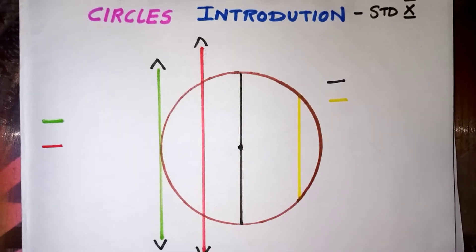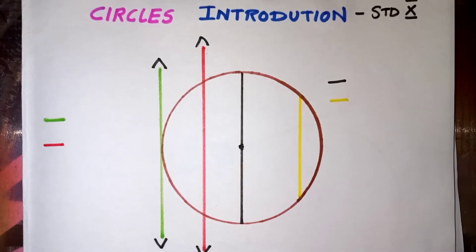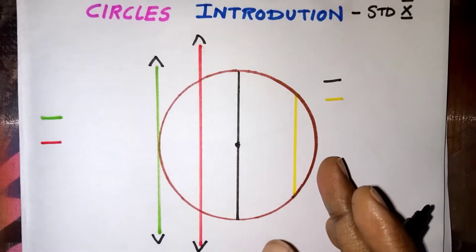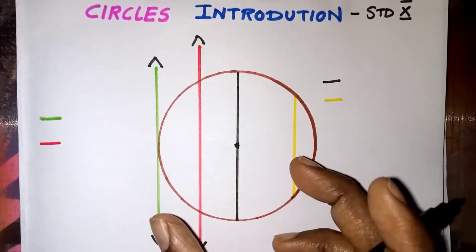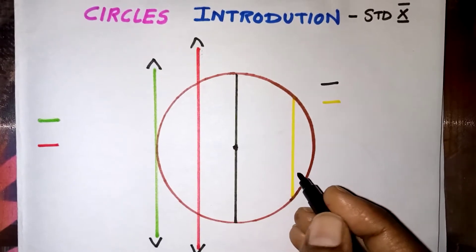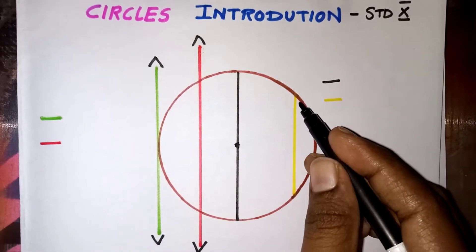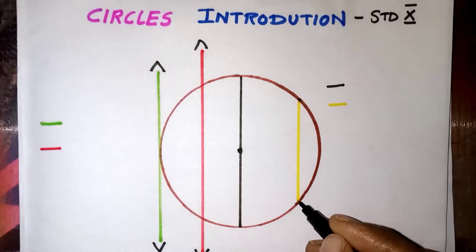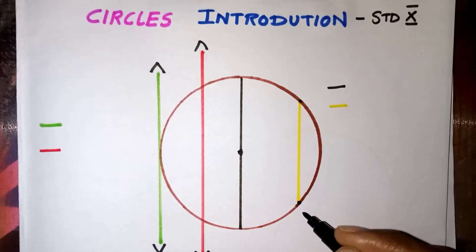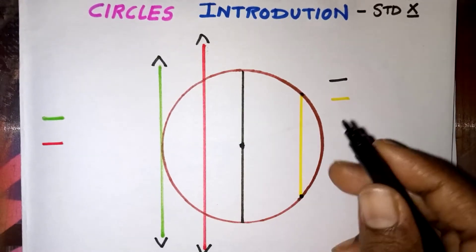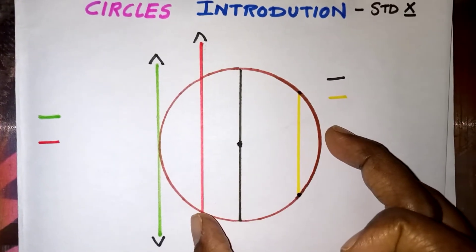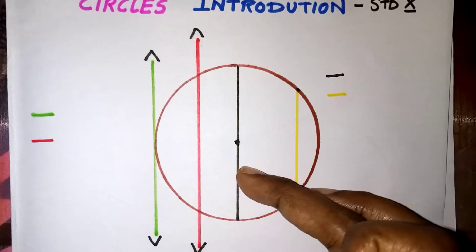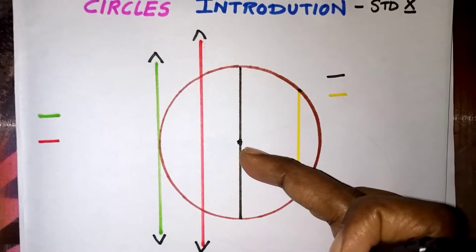In this video we are going to learn about circle introduction. Look at this diagram — we have some different types of lines in this circle. The first one is the chord. A chord is a line segment that touches the circle at two points. It can be drawn anywhere in the circle. Any line which touches only two points of the circle is called a chord.